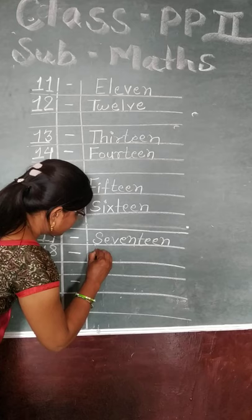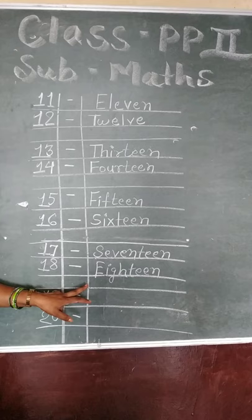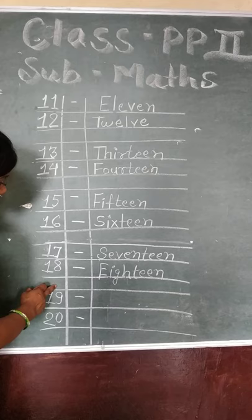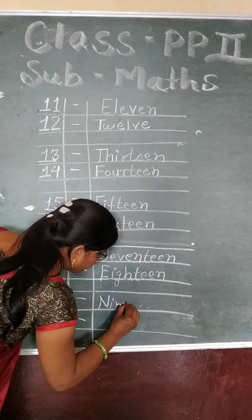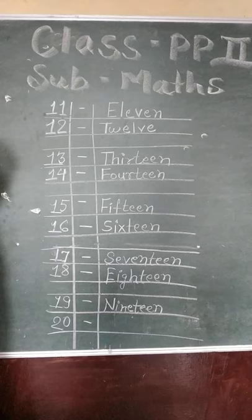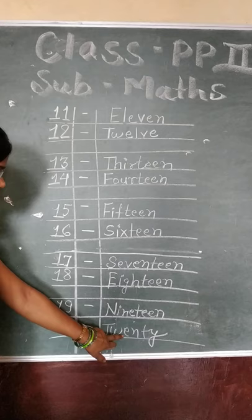P, I, G, H, T, W, E, N — 18. Ok? E, I, G, H, T, W, E, N — 18. After this, leave a box. Then 19 — N, I, N, E, T, W, E, N — 19. Then T, W, E, N, T, Y — 20. T, W, E, N, T, Y — 20. Look here, student.